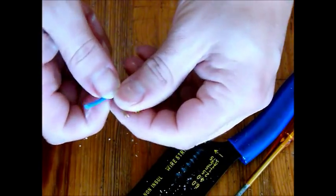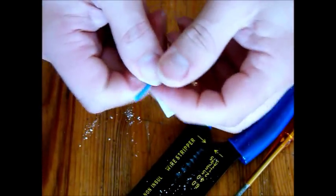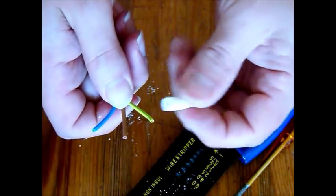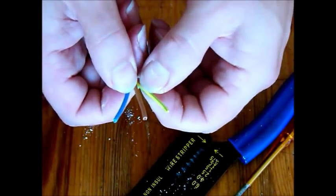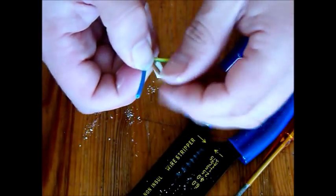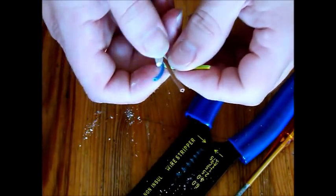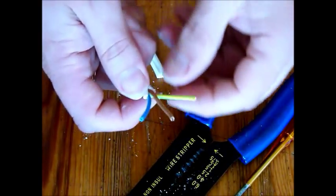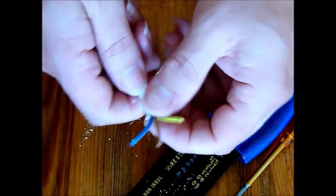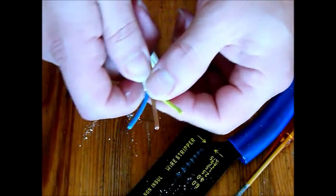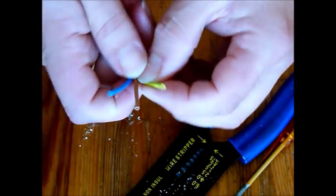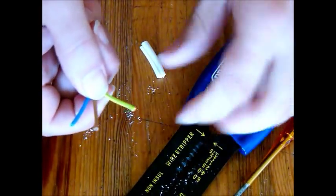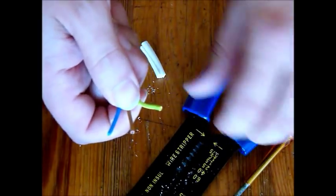Now check in the process of taking this piece of outer insulation off that you haven't actually cut through any of the insulation on the three inner wires. If you have, I'm afraid you need to start again. Chop it off and do the whole process again. It's a bit of an art learning how to get that outer sleeve off, but it'll soon come to you.